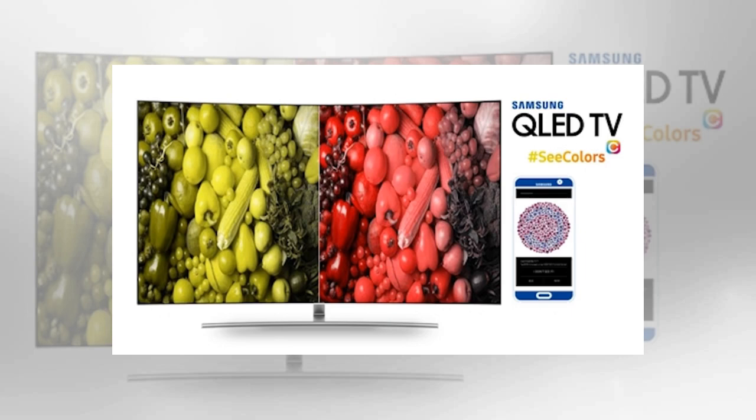The See Colors app itself is only compatible with Samsung's QLED Smart TVs and can only be installed on the Galaxy S6, S6 Edge, S6 Edge+, S7, S7 Edge, and S8 smartphones.